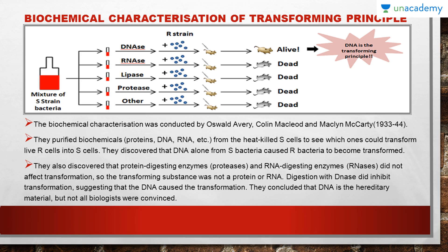They observed that the mouse lived when DNase was used. Then they put RNase into the mixture and injected into the mice along with R strain — the mouse died. The same was the case with other enzymes such as lipase and protease. They discovered that protein-digesting enzymes, proteases, and RNA-digesting enzymes, RNases, did not affect transformation. It was only DNase that could digest DNA and when injected into the mice, it affected the transformation. Hence they concluded that DNA is the hereditary material, but not all biologists were convinced.